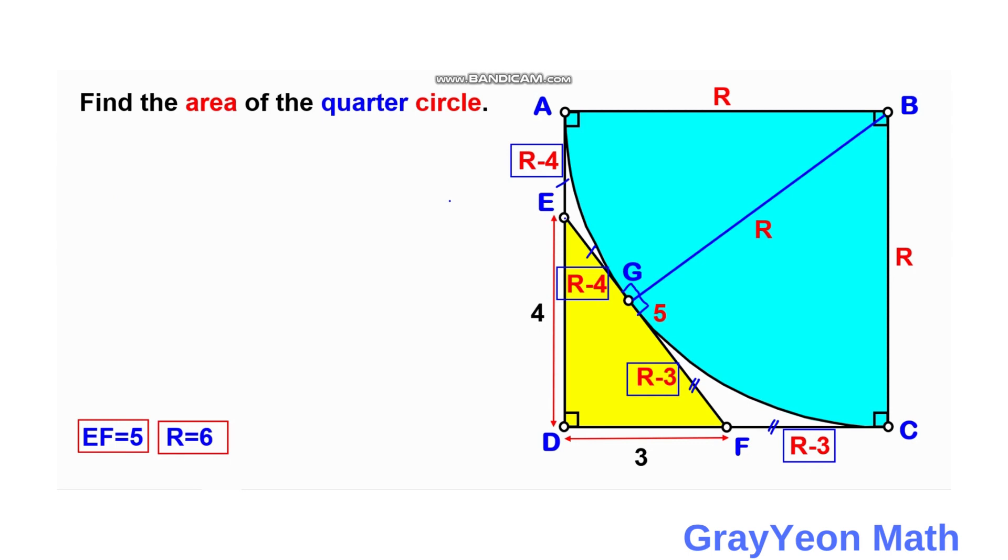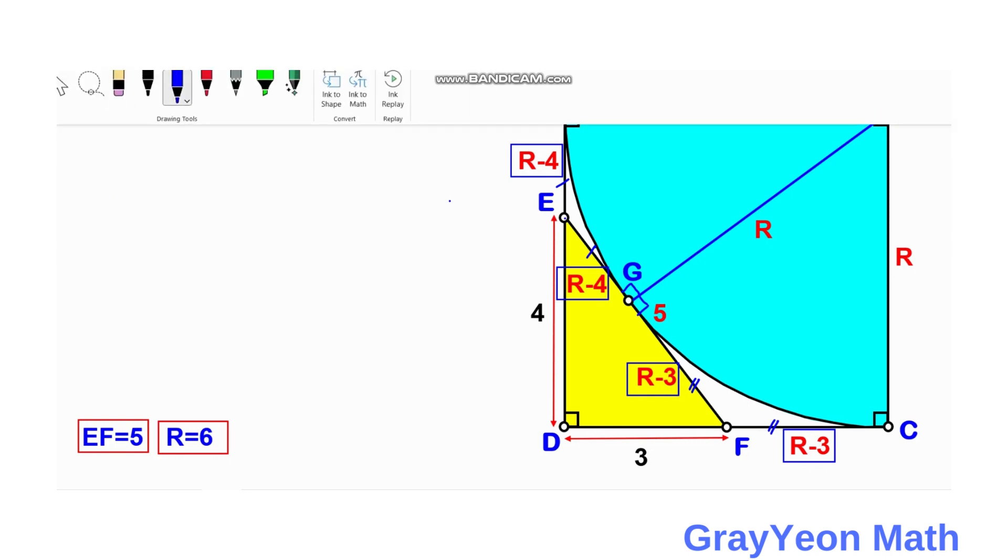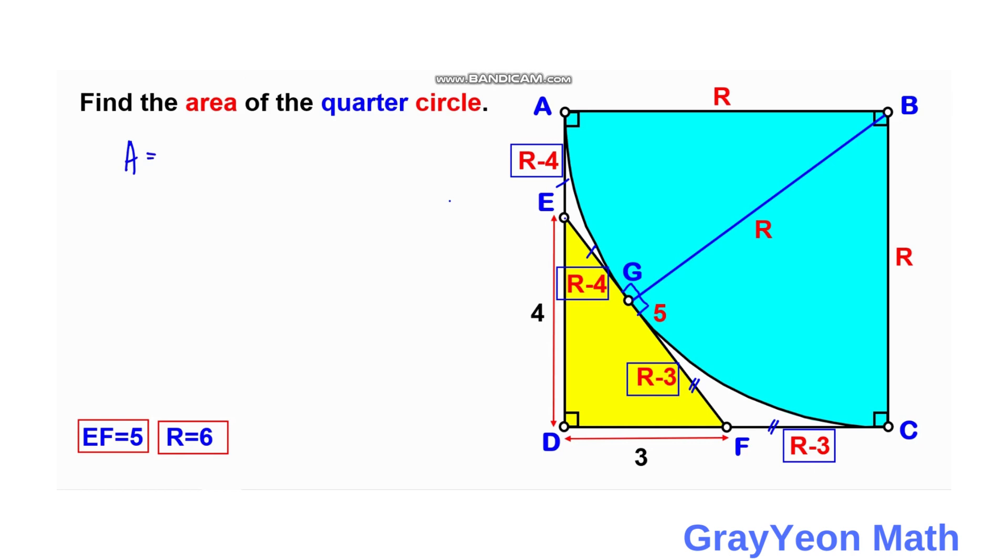Now that the radius is solved, we can actually find the area of this quarter circle. Area is equal to pi over 4, since this is a quarter circle, times R squared. So area is equal to pi over 4 times 6 squared. This becomes 36. So 36 over 4 is actually 9. Area is equal to 9 pi square units. And that is our answer.